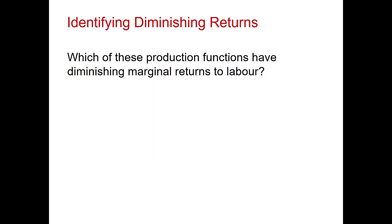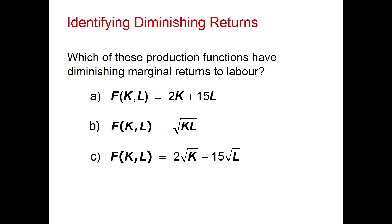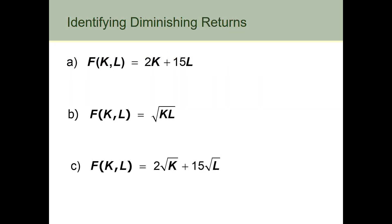Now that we've established what diminishing returns are, let's see if we can identify them in production functions. We'll use the same three production functions as in example one. Remember, the marginal product of labour is equal to the first partial derivative of the production function with respect to L: ∂f(k,L) / ∂L — in other words, differentiating our production function with respect to L holding k constant.